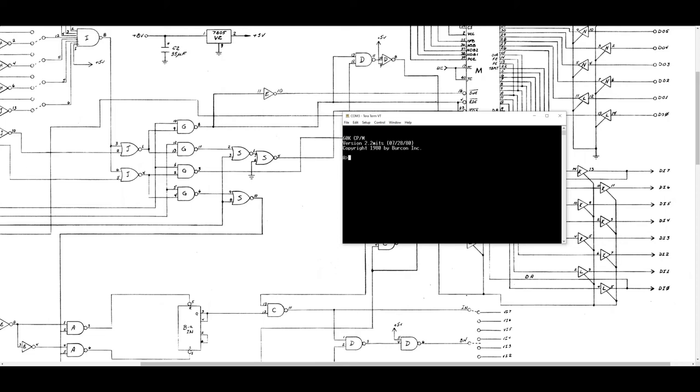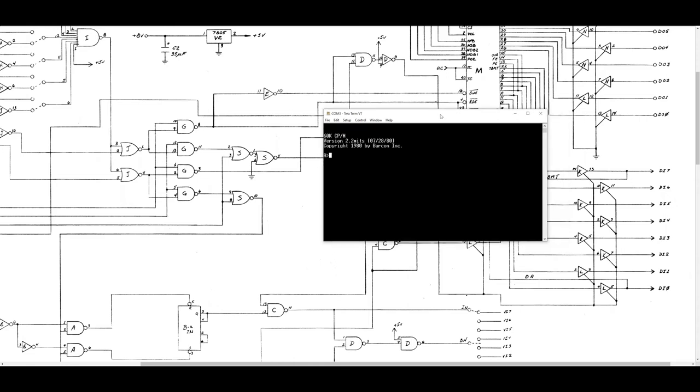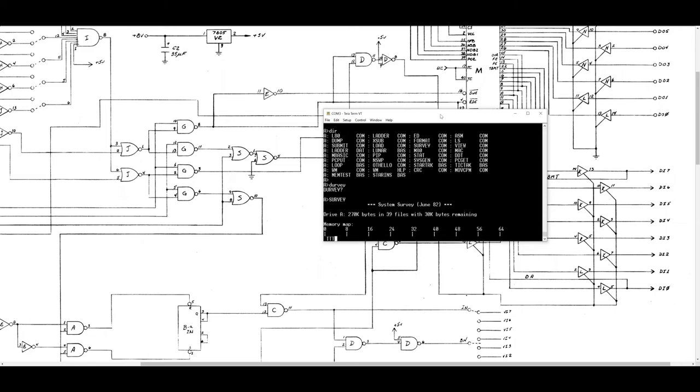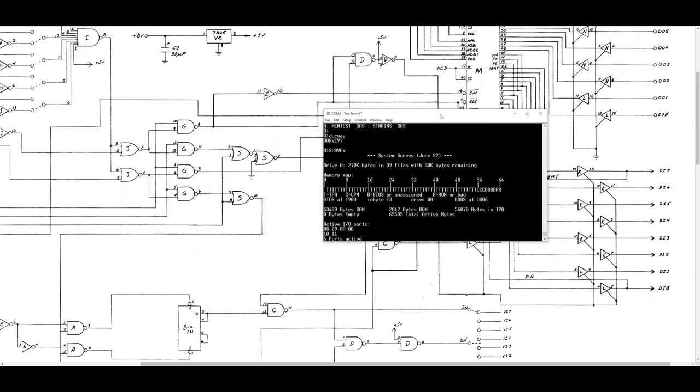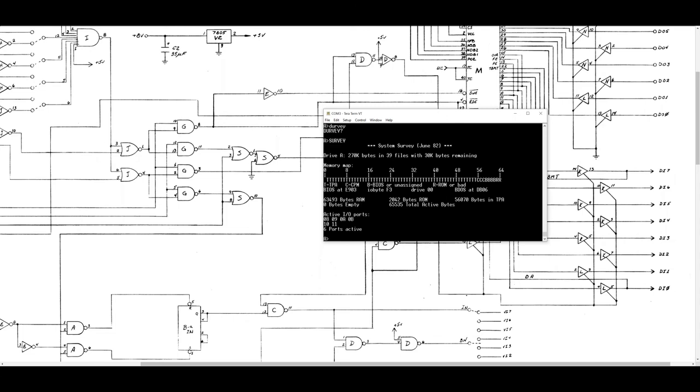We've got the CPM boot on the MITS SIOB card. So with those changes, I will document these changes. But that's really nice. I really like the fact that I can run this card on that old original card that we've put so much time and effort into. And there it is. We've got ports hex 10 and 11 are the UART. 10 is the status, 11 is the data. That's really cool. Success.